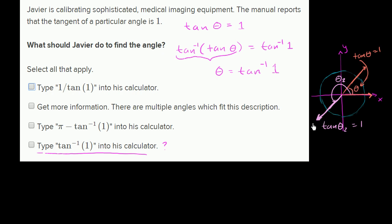But this one is fundamentally a different angle. So we do not know, we do not have enough information just given what we've been told to know exactly which theta we're talking about. Whether we're talking about this orange theta or this mauve theta. So I would say to get more information, there are multiple angles which fit this description.